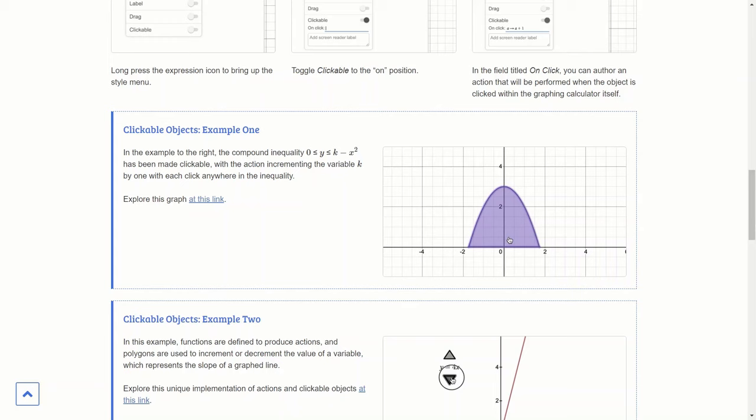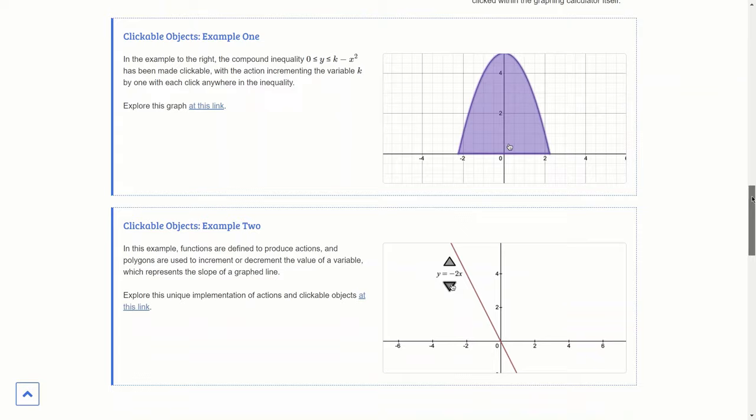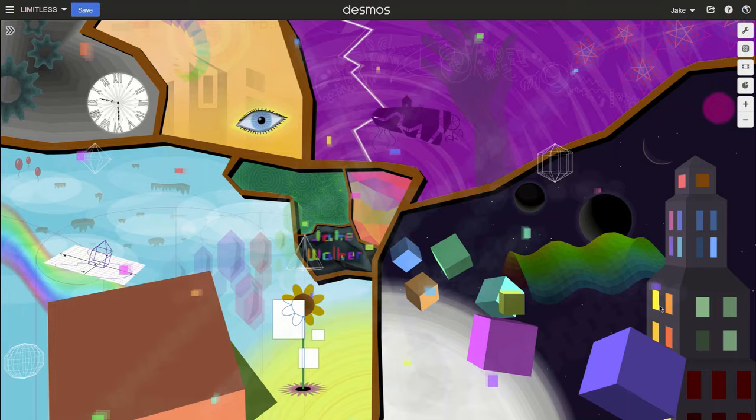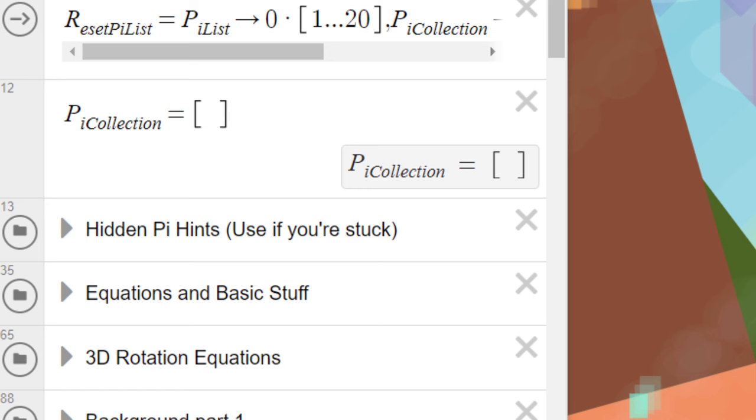Desmos introduced clickable objects that year that can perform actions, so I hid 20 pi symbols throughout the graph that you're able to click on. This was to incentivize scrolling through and exploring all the different areas in it. I even included a hint folder for people who got stuck.